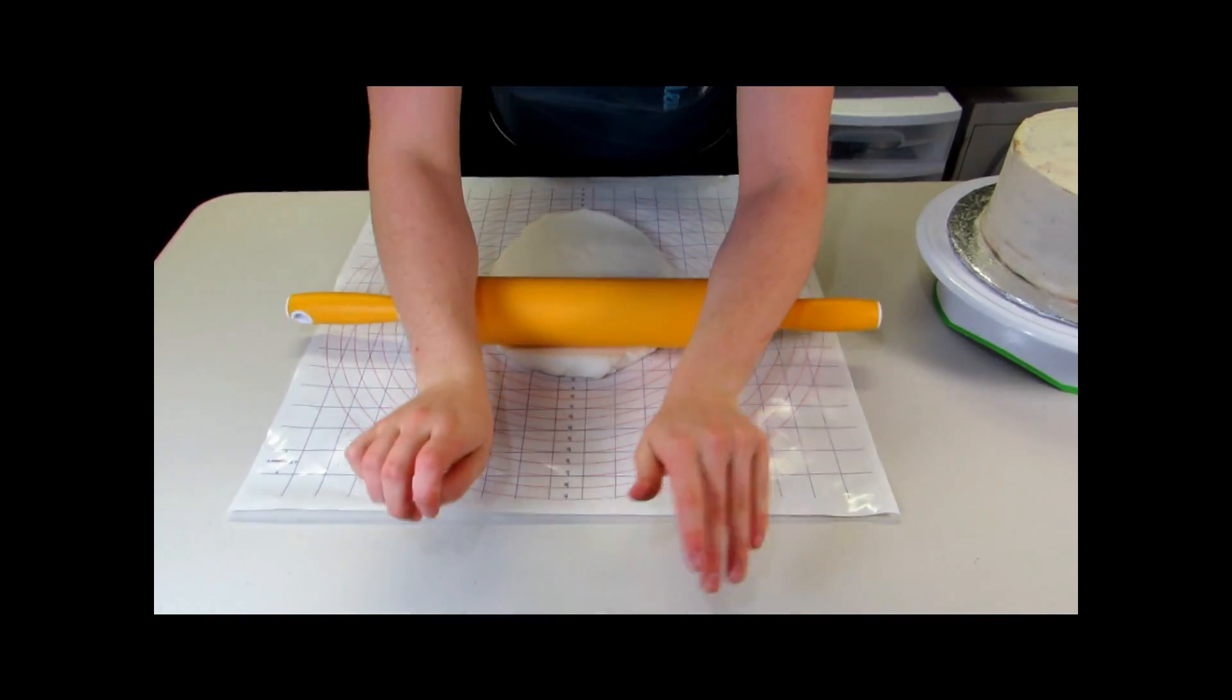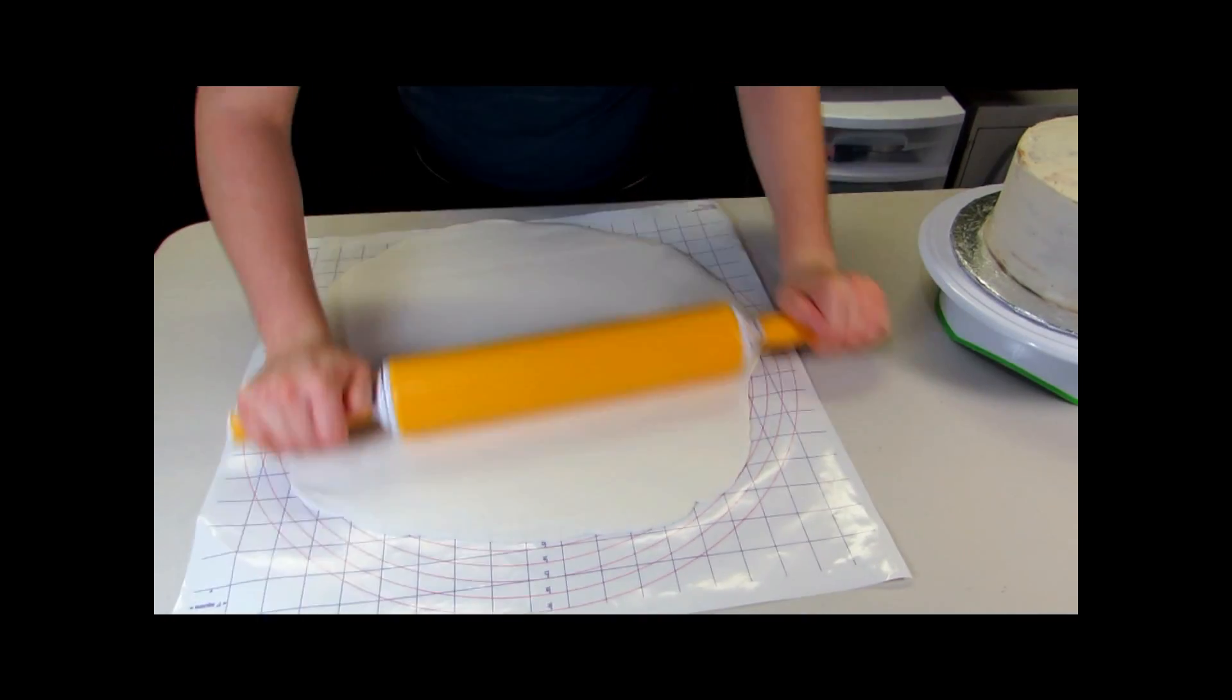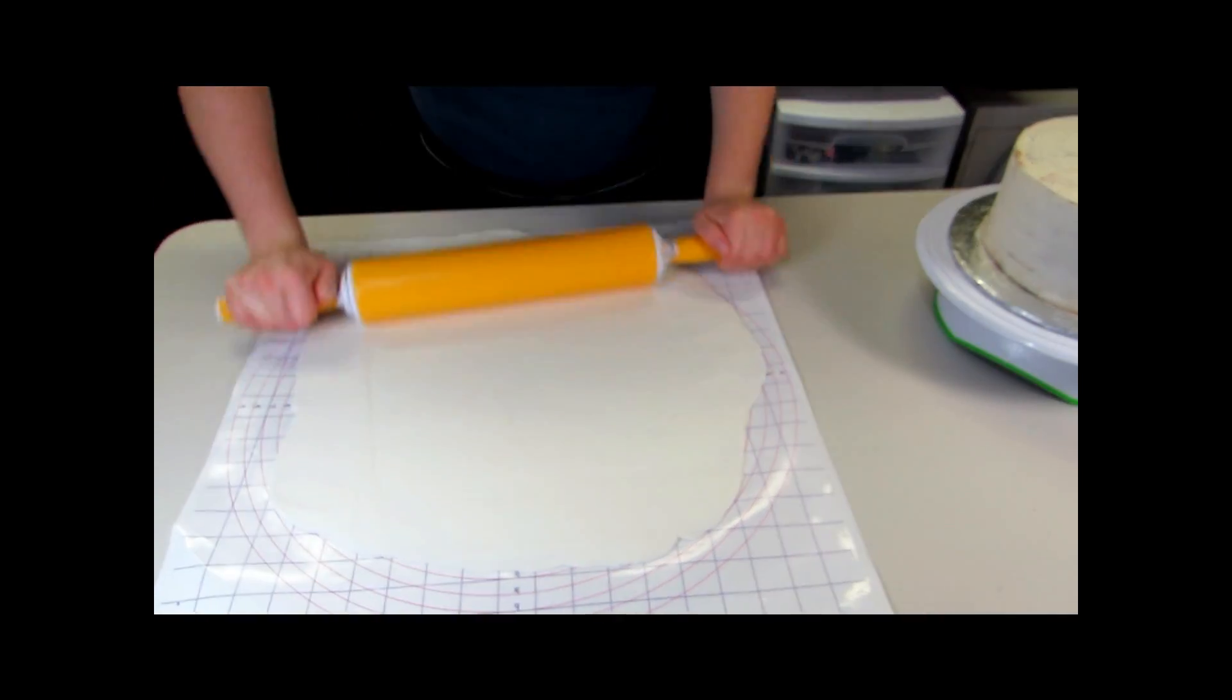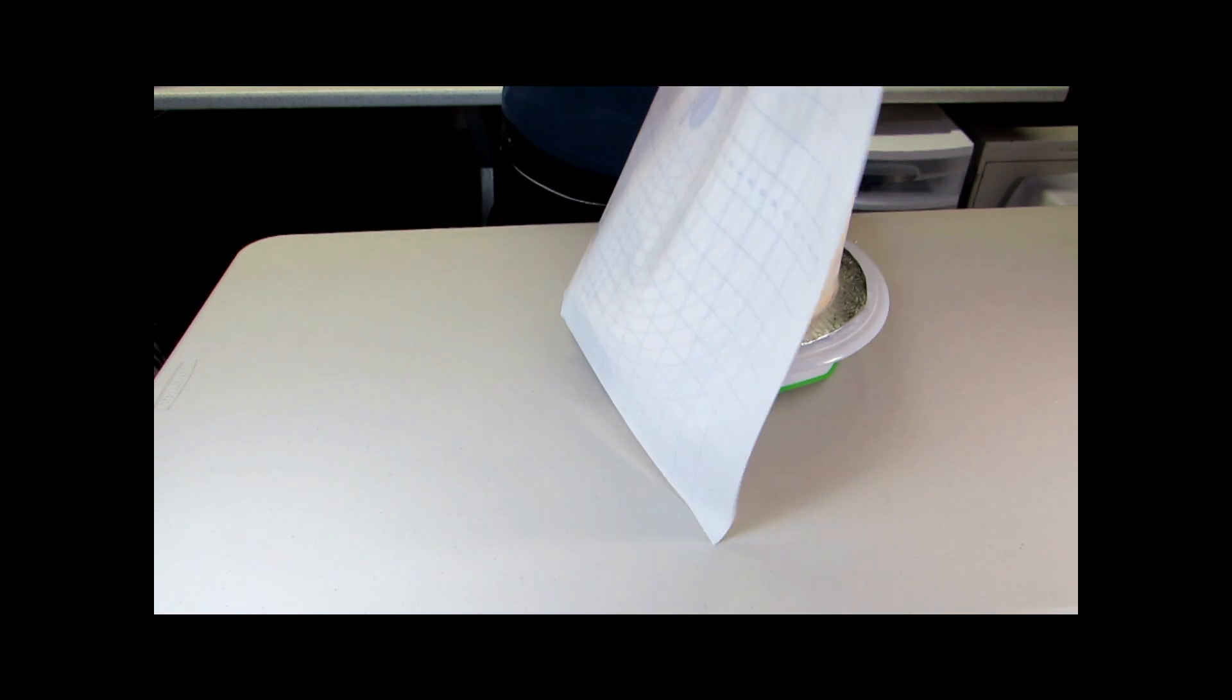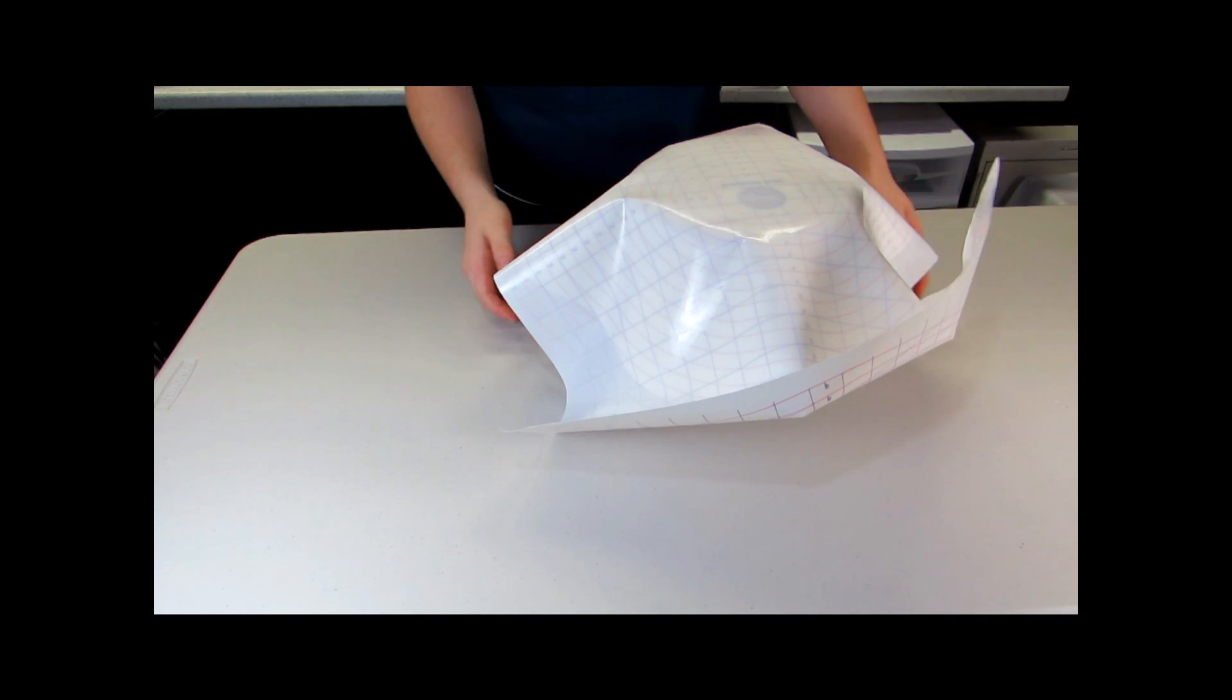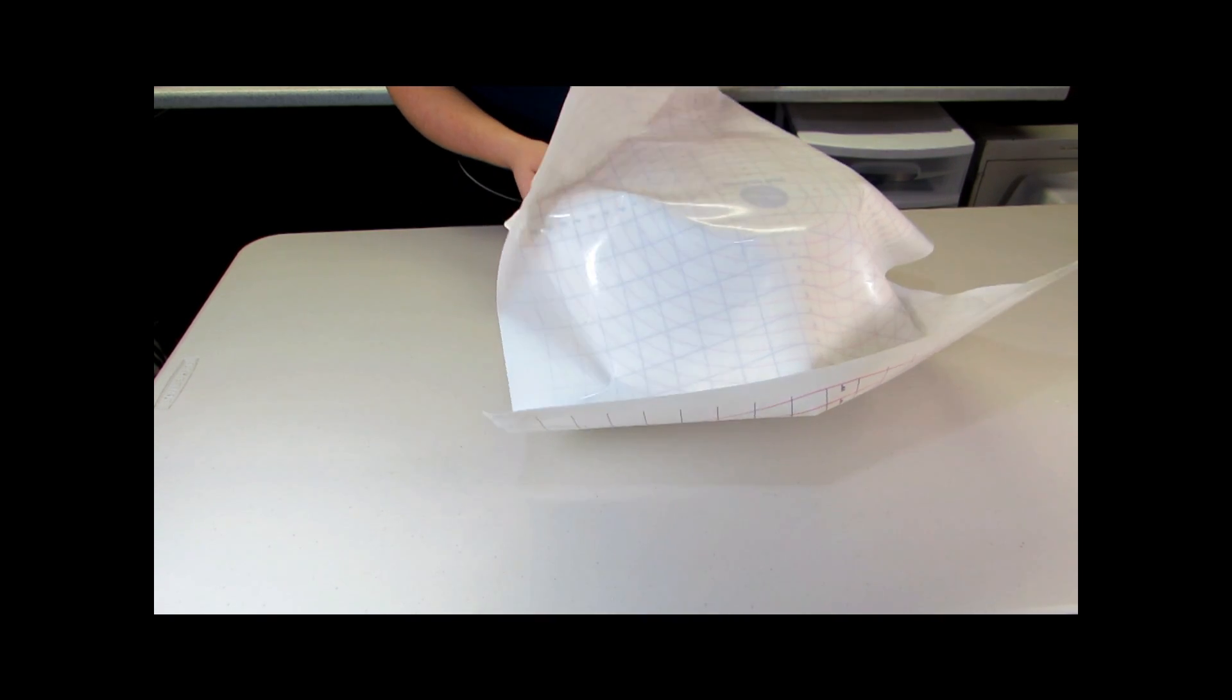Now you're ready to cover your cake in fondant. I've already iced my cake and now I'm just going to roll out some white fondant and I'm rolling this out on my plastic sheet. And then I'm going to lift the sheet up, place it over top of my iced cake and then peel it off. And then that will leave the fondant onto the cake.